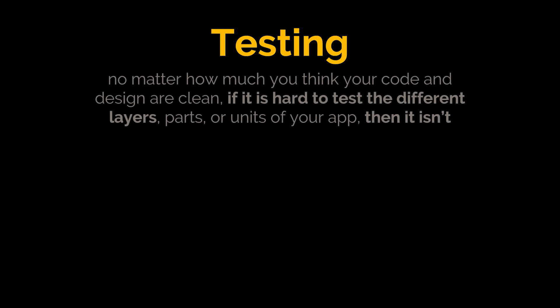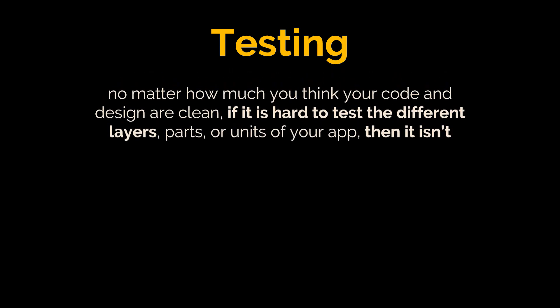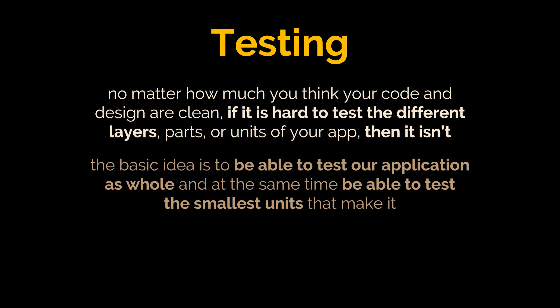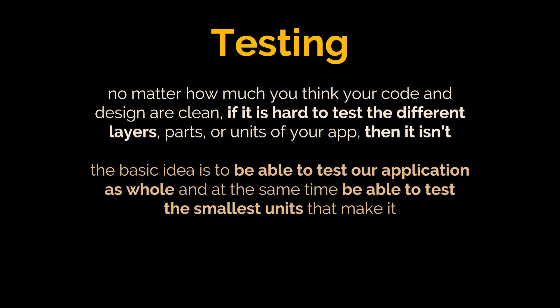With that out of the way, the last thing I want to mention and kick off today is testing. One fundamental rule of clean architecture is testability. No matter how much we think our code and design are clean, if it is hard to test the different layers, parts, or units of your app, then it isn't. The basic idea is to be able to test our application as a whole and at the same time be able to test the smallest units that make it up.